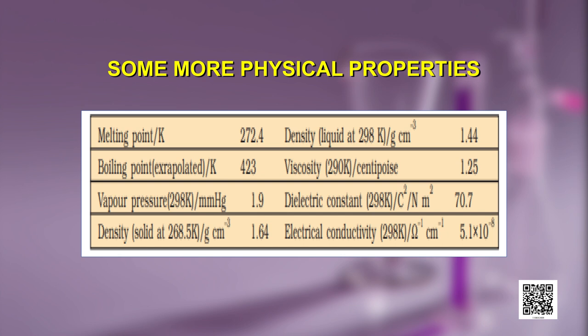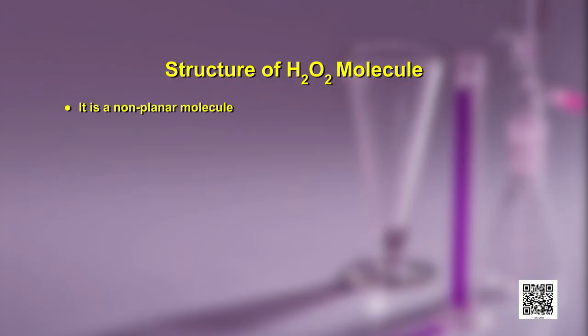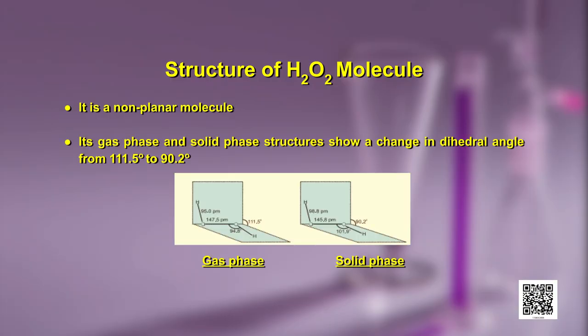Let us now have a look at the structure of the hydrogen peroxide molecule. It is a non-planar molecule. Its gas phase and solid phase structures show a change in the dihedral angle from 111.5 degrees to 90.2 degrees. The structures for both gas phase and solid phase are shown here, and you can also see the change in bond lengths in these structures.